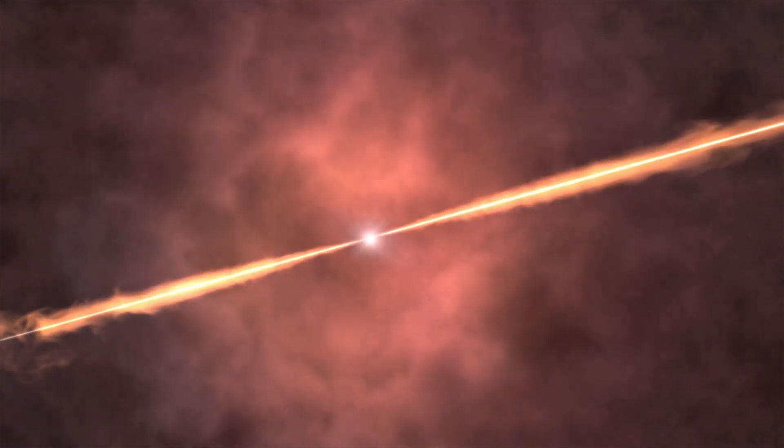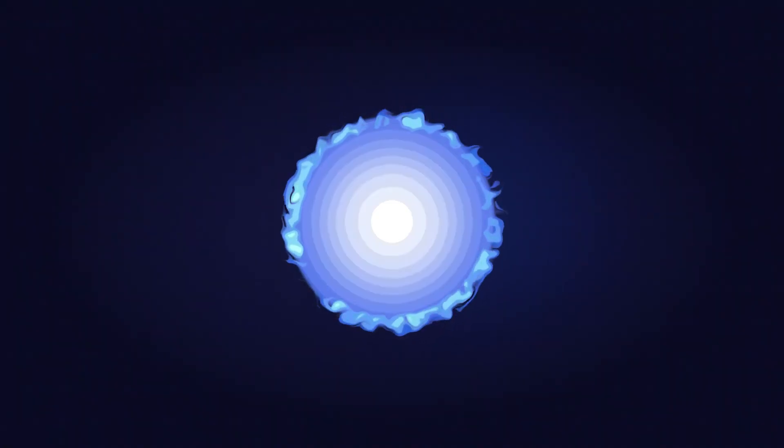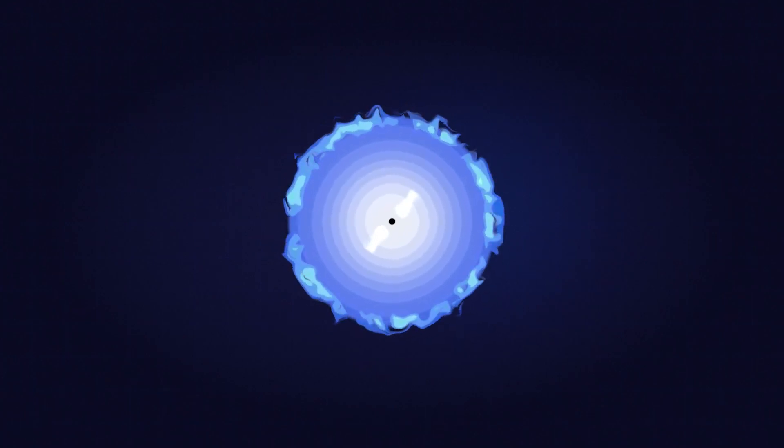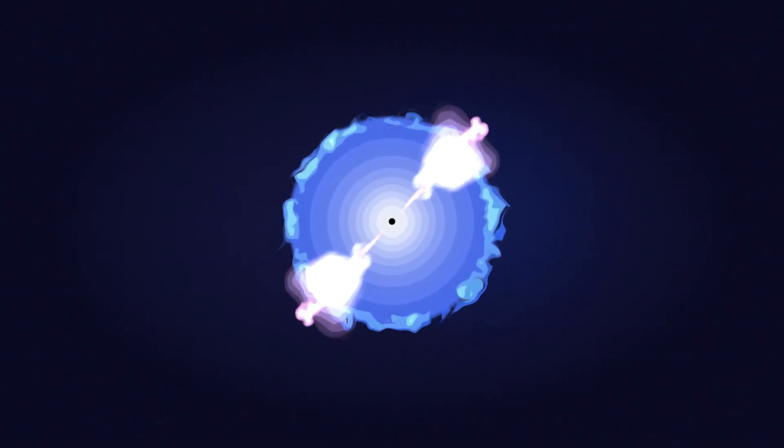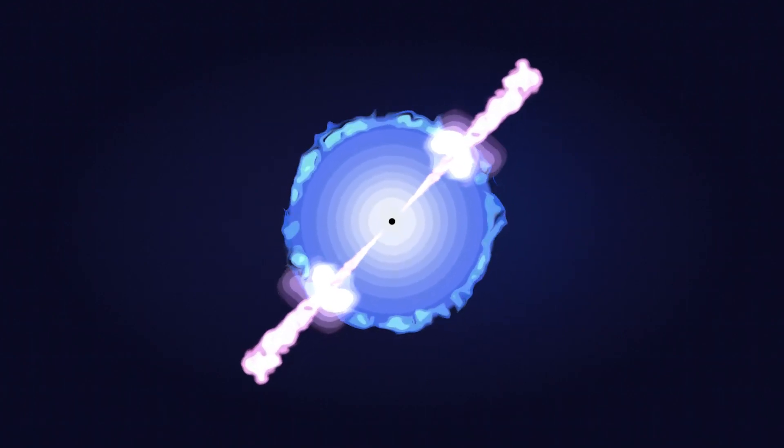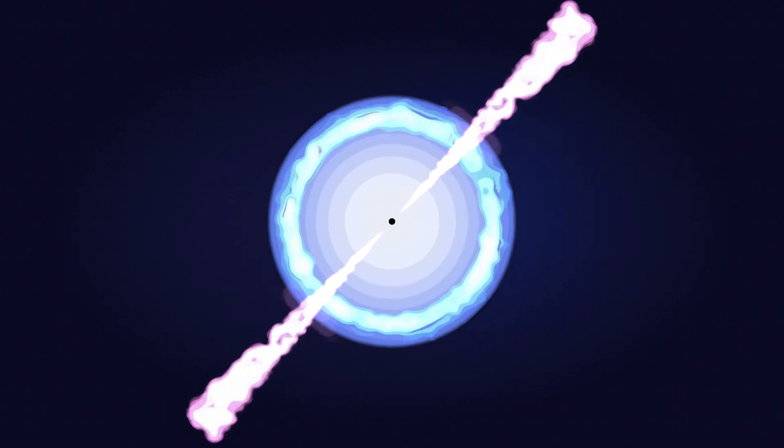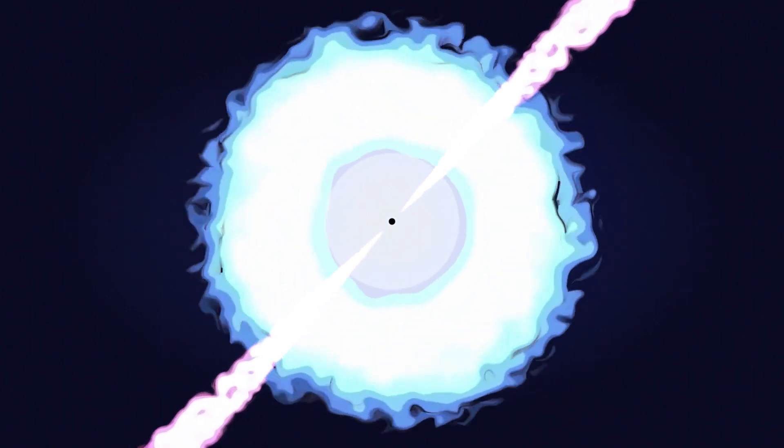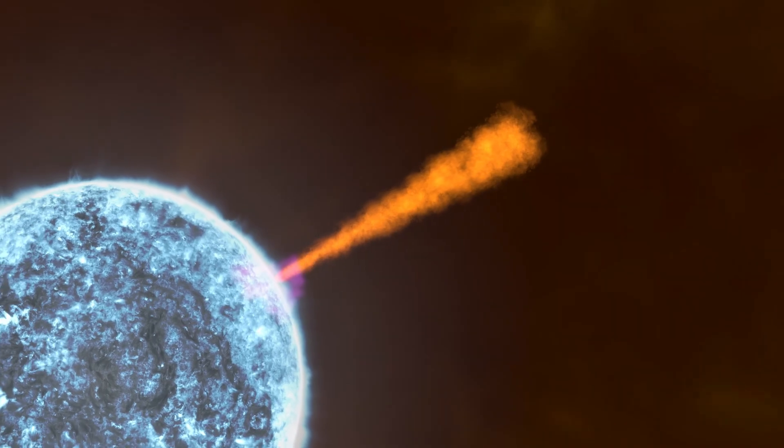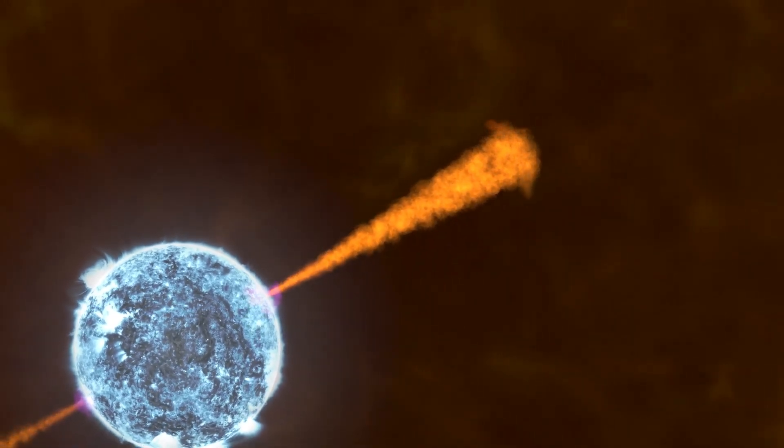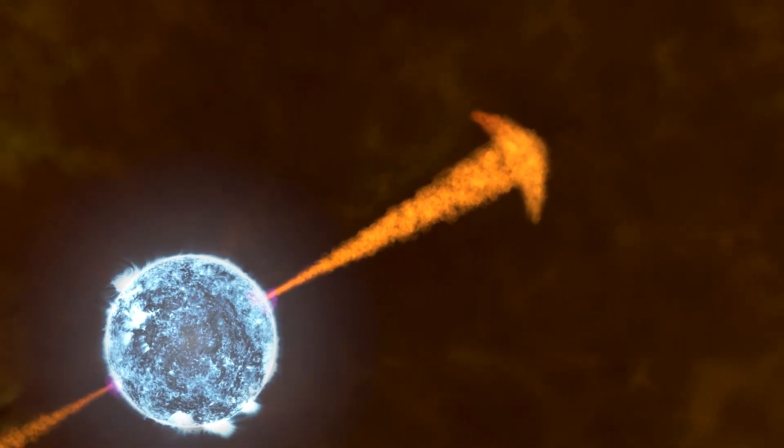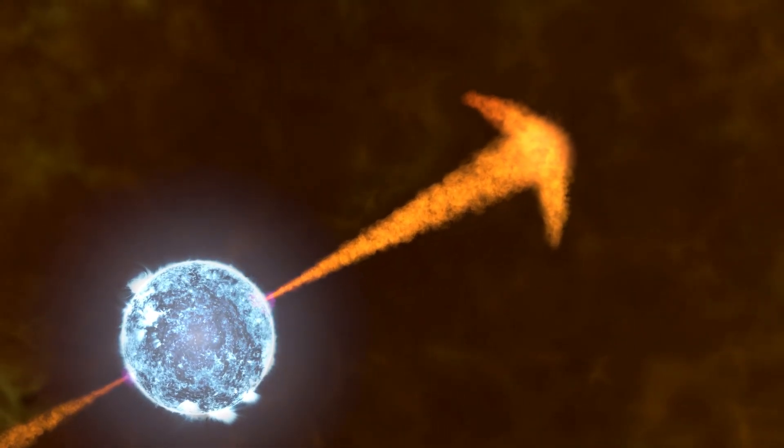Now, let's talk about gamma-ray bursts, the ultimate cosmic lasers of doom. Picture this. Somewhere in the universe, a massive star is living its best life until it runs out of fuel. Instead of quietly fading away, it collapses in on itself, creating an explosion so intense that it releases more energy in a few seconds than our sun will produce in its entire 10 billion year lifespan.